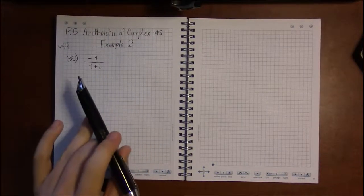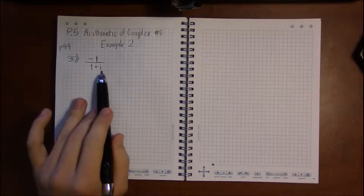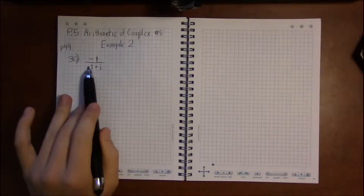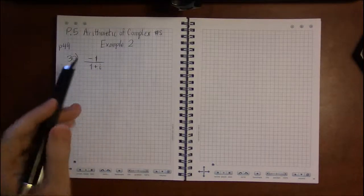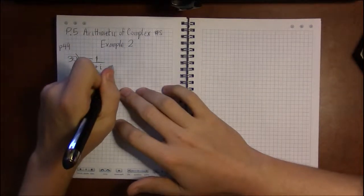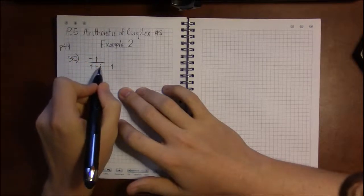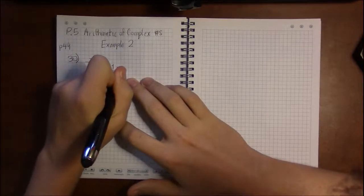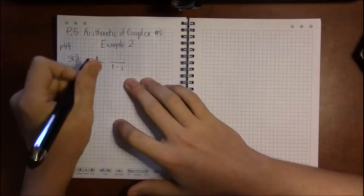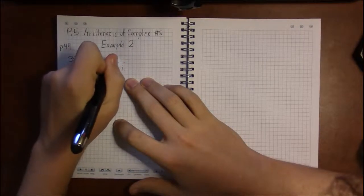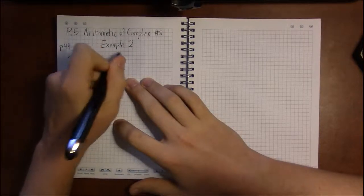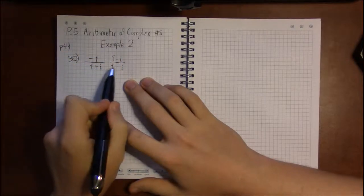I need to take its conjugate. Change the sign on i, so instead of being 1 plus i, it's 1 minus i, and multiply top and bottom by this conjugate. So in this case, that means multiply top and bottom by 1 minus i.